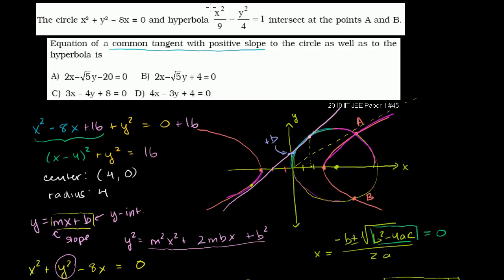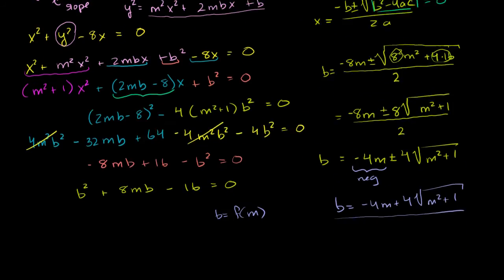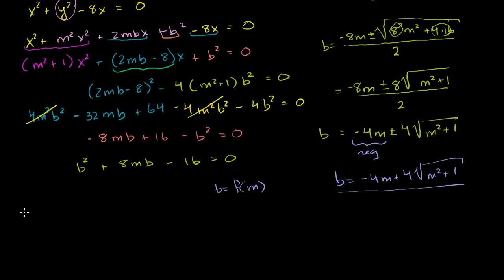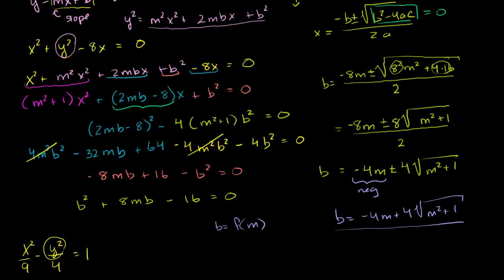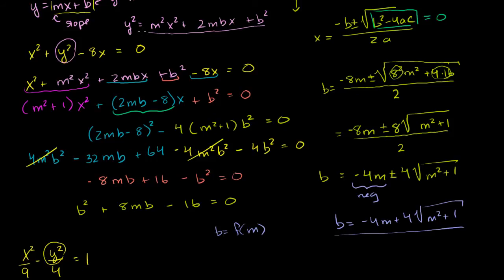They give it to us right over there. It's x squared over 9 minus y squared over 4 is equal to 1. Now we can substitute the y squared with y = mx + b that we got from the last video. We actually figured out what y squared was equal to — y squared was equal to all of this business up here, because it's the same line. This is the whole point: we're trying to find two constraints on that same line.